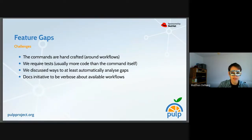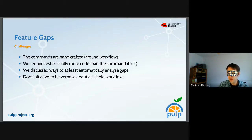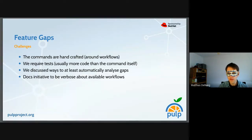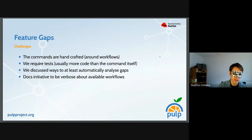We tried to make writing commands very easy, but we require tests for everything — for every function at least — and this ends up being more code than the actual command in some places. Lately we discussed ways to at least automate finding feature gaps: the idea is to scan for each endpoint we hit and list all the ones we don't hit. That may be valuable information, though we haven't gone there yet. And it's not complete because hitting an endpoint doesn't mean we support every single feature of it.